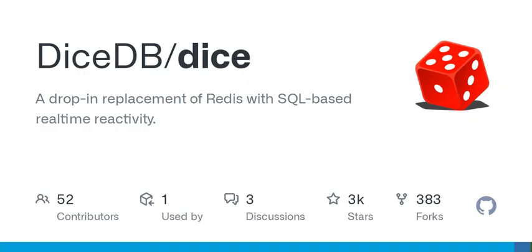DiceDB can be accessed using any Redis client due to its Redis dialect compatibility. To utilize the Q-Watch feature, download the DiceDB CLI from PyPI.